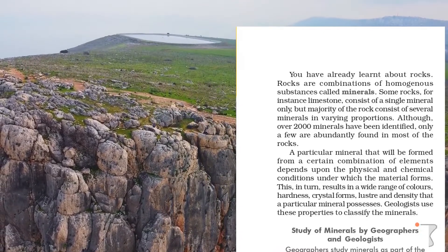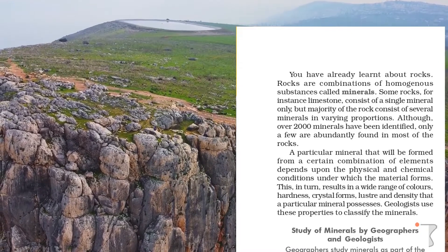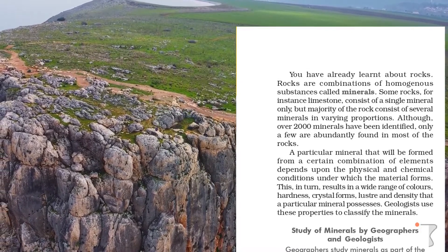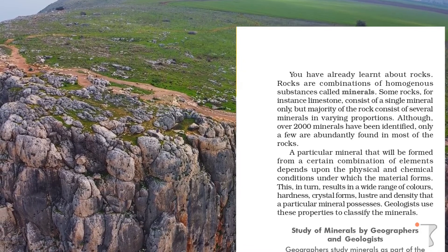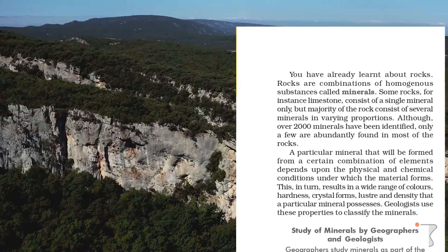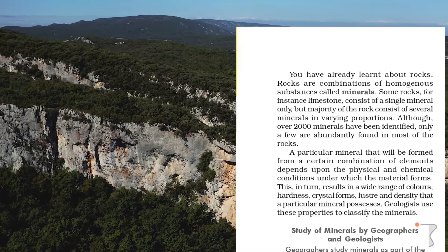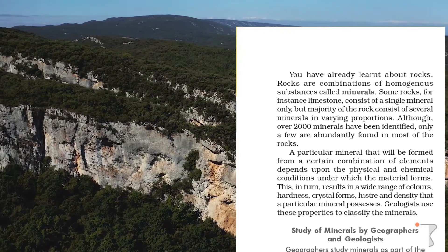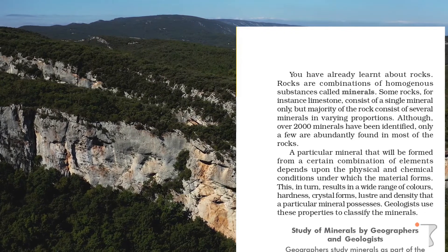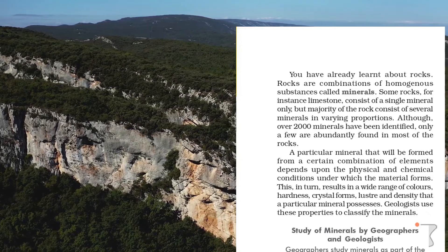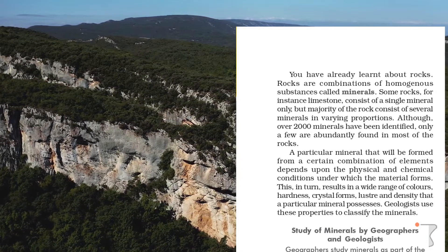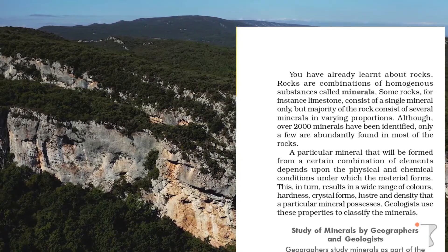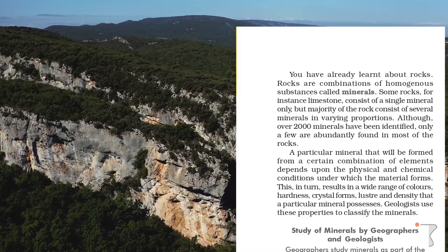Although over 2,000 minerals have been identified, only a few are abundantly found in most rocks. A particular mineral that will be formed from a certain combination of elements depends upon the physical and chemical conditions under which the material forms. This, in turn, results in a wide range of colors, hardness, crystal forms, luster and density that a particular mineral possesses. Geologists use these properties to classify the minerals.